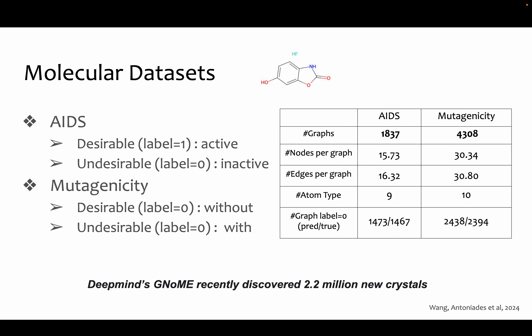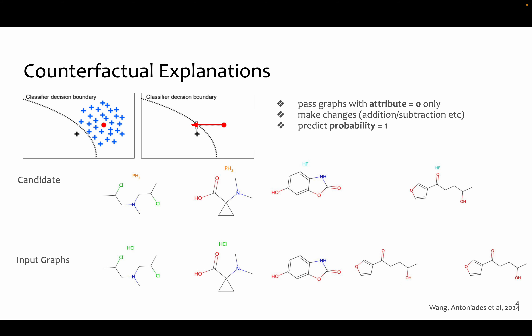The question is: how do we actually understand what the black box classifier is doing? To understand this, we leverage counterfactual explanations, which are basically the minimum change required to change the prediction of the classifier.